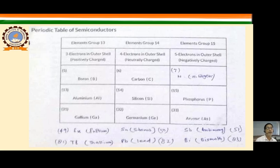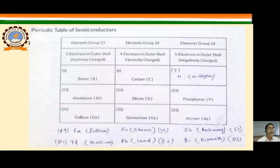Silicon and germanium have 4 electrons in their outer shell, forming 4 electron bonds. When elements from Group 15 — such as phosphorus, arsenic, or antimony — are added as impurity, they also form 4 electron bonds but have one extra electron that is free to move, carrying a negative charge.